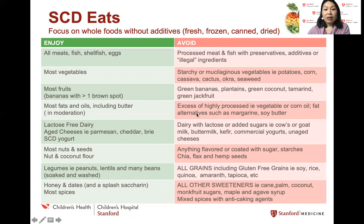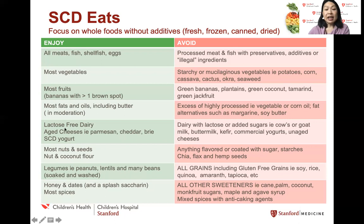Like all diets for IBD, the SCD really tries to limit the use of highly processed oils such as canola, vegetable, or corn oil, as well as fat alternatives such as margarine or soy butter. In terms of dairy, unlike many IBD diets, it does allow dairy as long as it is lactose-free. This includes lactose-free milk if you can find any that doesn't have thickeners. It also allows aged cheeses — all cheeses aged for more than 30 days where the label says carbohydrate zero. That includes parmesan, cheddar, and brie.